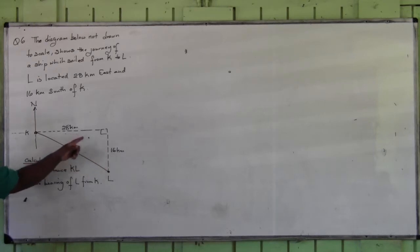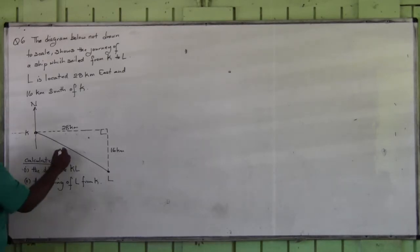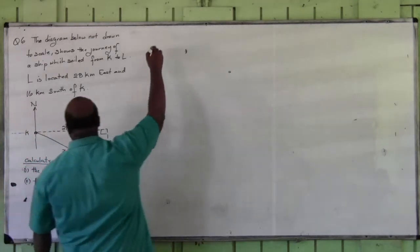First thing, calculate the distance KL. If I have two sides of a right angle triangle and I wish to find the length of the third side, what must I use? I must use Pythagoras theorem.